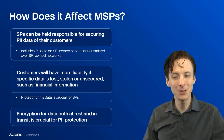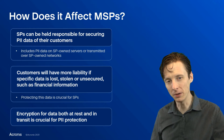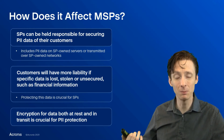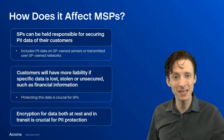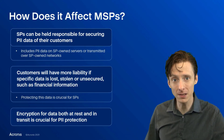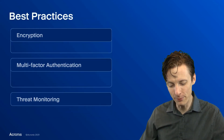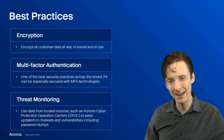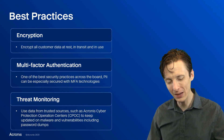So what we want to do wherever possible is use encryption for data at rest, data in transit, data wherever — we want to encrypt it if it's at all possible. And that's sort of the key best practice with PII: encryption wherever possible.